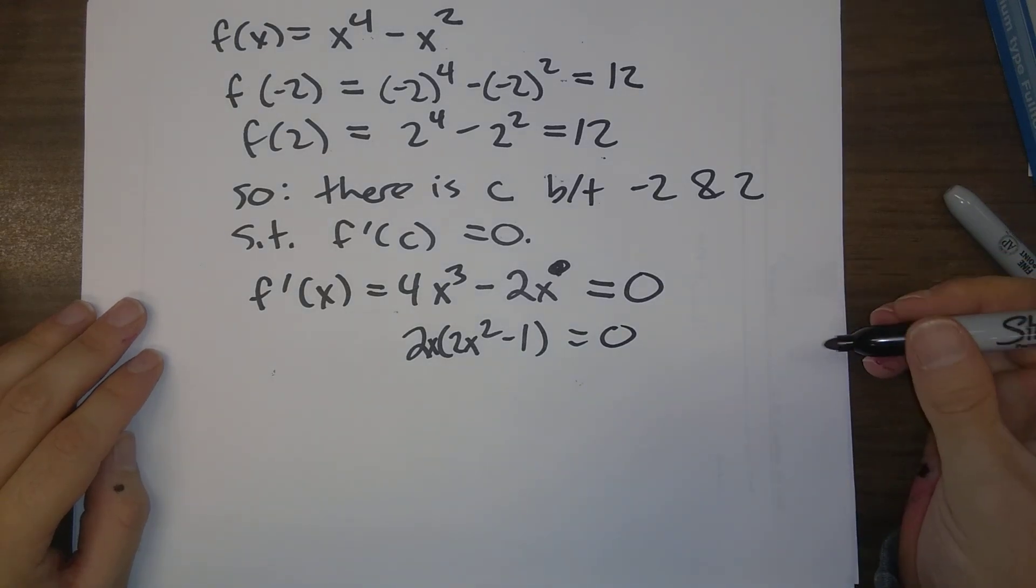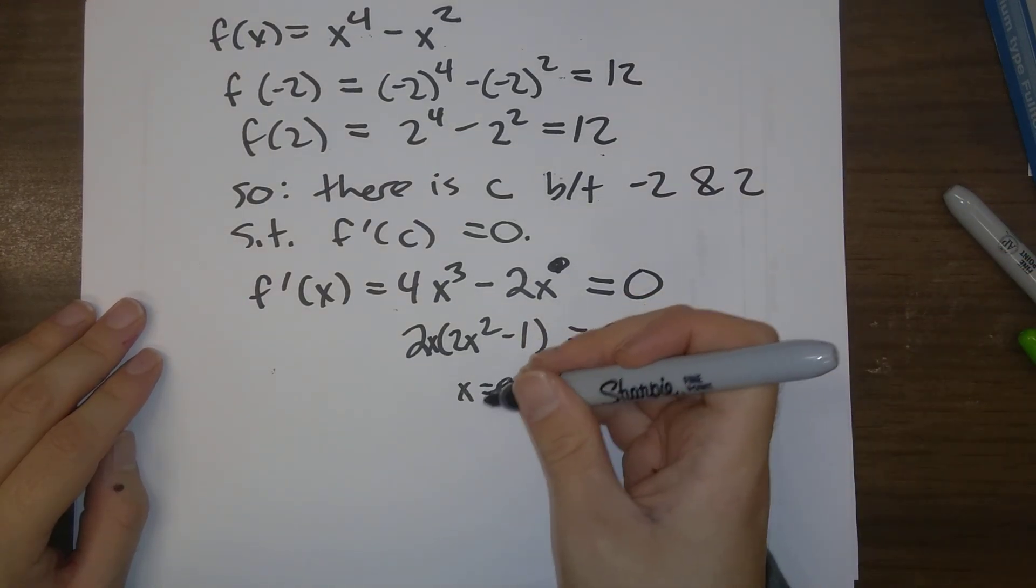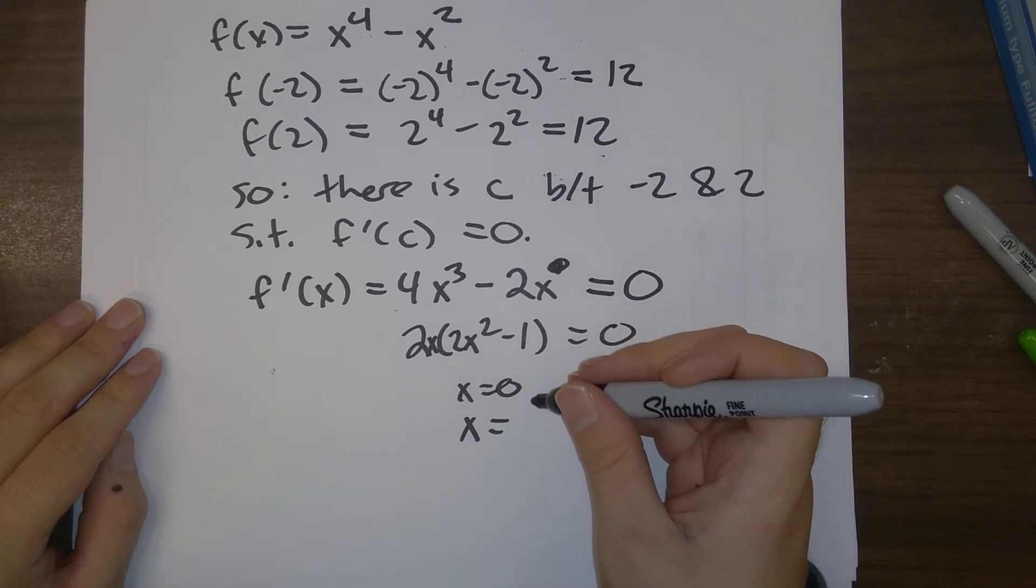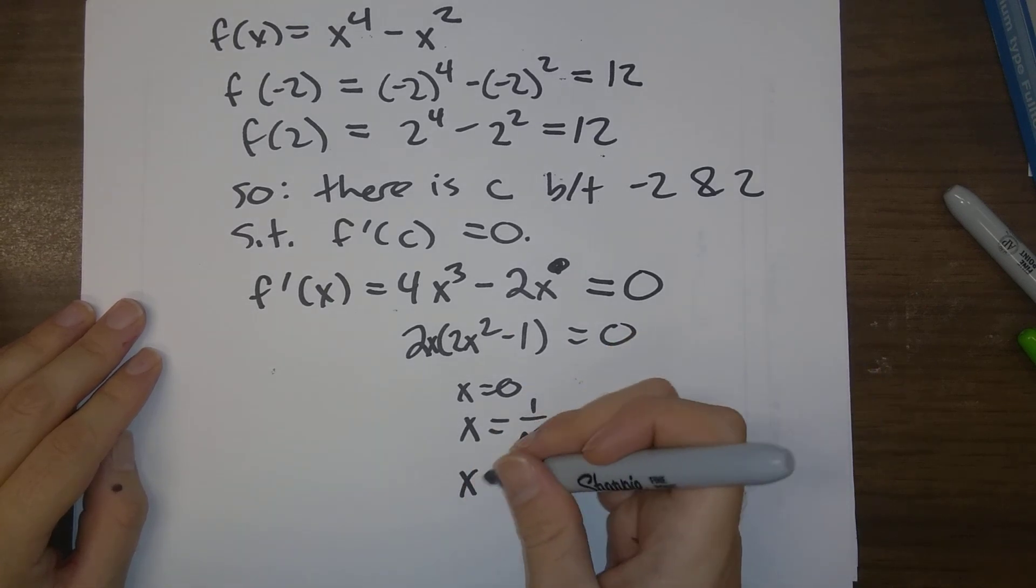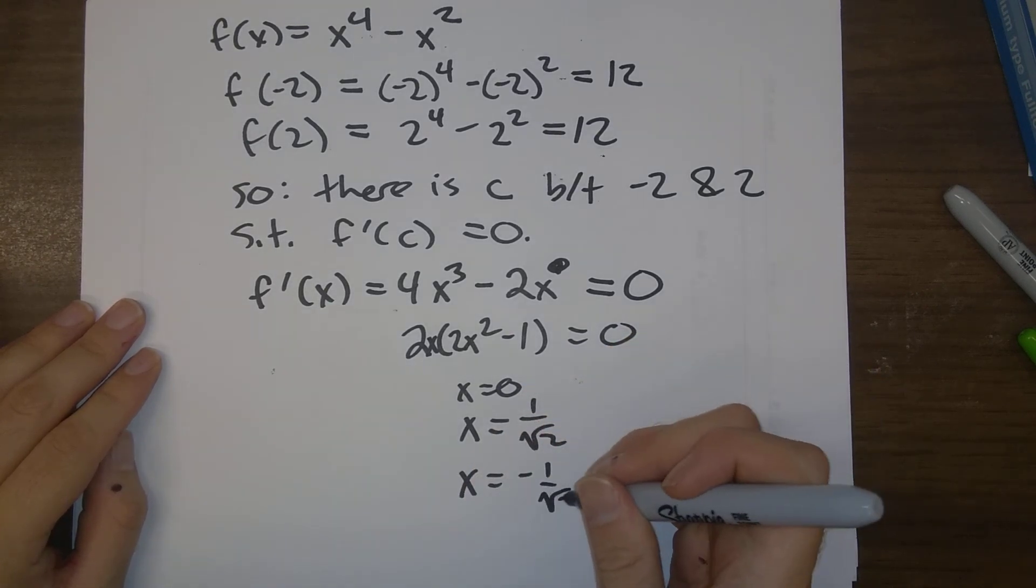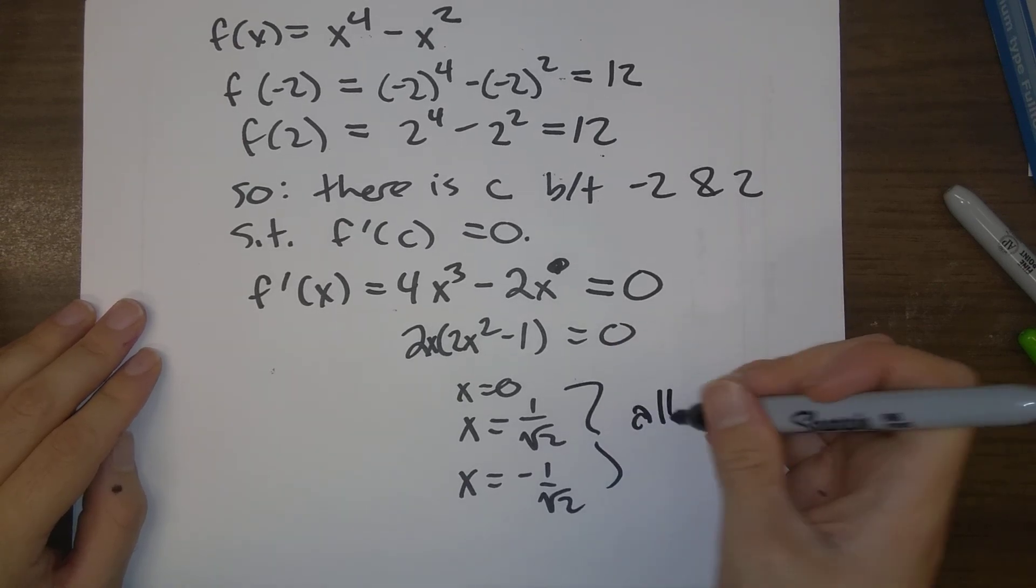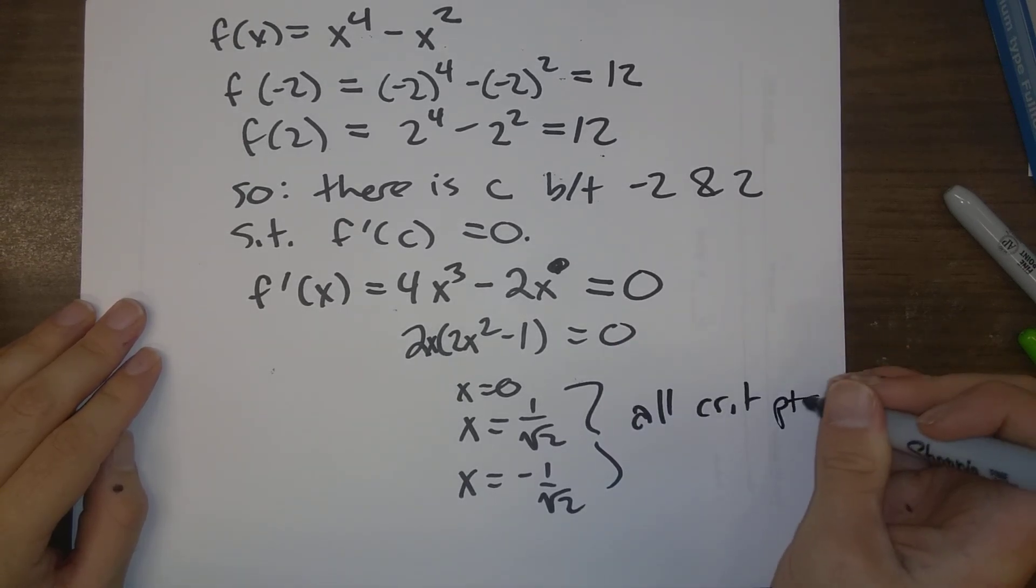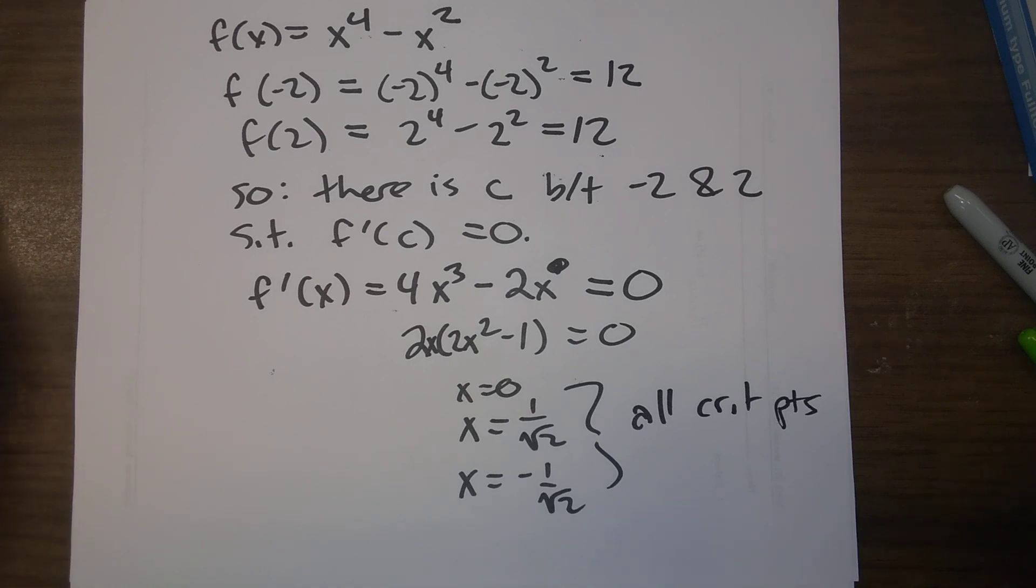2x times 2x squared minus 1 is equal to zero. There's actually three different points: x is equal to zero, x is equal to 1 over root 2, x is equal to minus 1 over root 2. These are all critical points. They're all places in which the derivative is equal to zero.